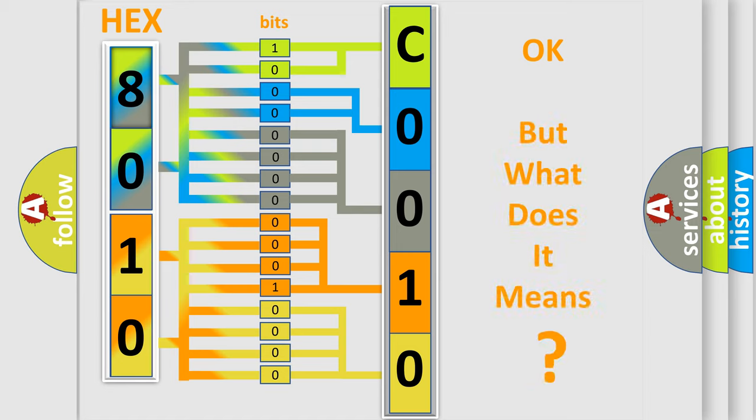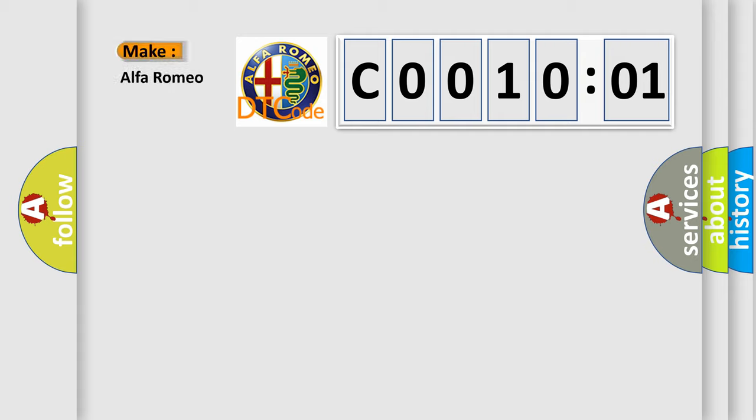The number itself does not make sense to us if we cannot assign information about what it actually expresses. So, what does the Diagnostic Trouble Code CO01001 interpret specifically for Alfa Romeo car manufacturers?